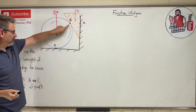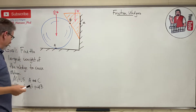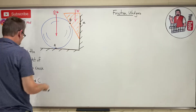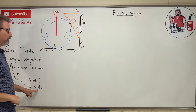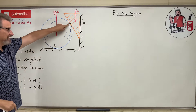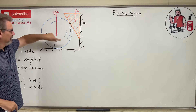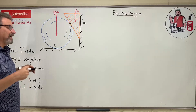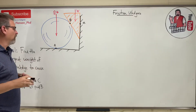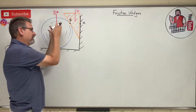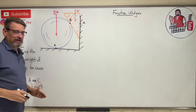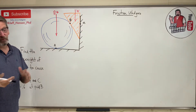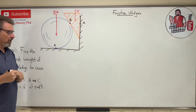Does B slip or does A slip? They tell us that the coefficient at A and C is 0.5 — so at the wall here and here it's 0.5 — and at point B it's 0.6. That tells me B is a little bit more grippy and the floor is more slippy. So I'm going to work this problem assuming point A slips and point B does not slip, then come back and check point B to make sure I'm right.